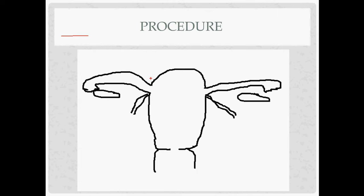After opening, grab the uterus with Kocher clamps at the cornua — the area near where the fallopian tubes insert. Above the cornua is the fundus; below is the body. The first real operative step is dividing the round ligament. When looking in the abdominal cavity, the ovary is typically the only white structure visible.